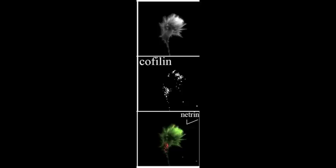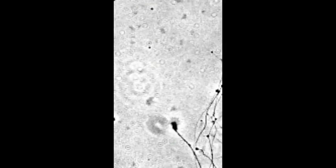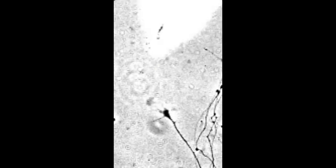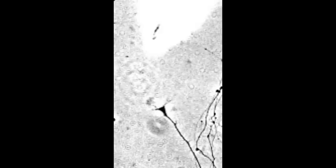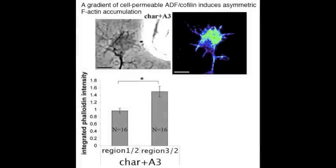In a gradient of cell-permeable ADF cofilin, growth cones turn up the gradient, just like turning towards an attractive cue. Similar to growth cones in a gradient of attractive cues, actin filaments accumulate in growth cone regions closer to the cell-permeable ADF cofilin.